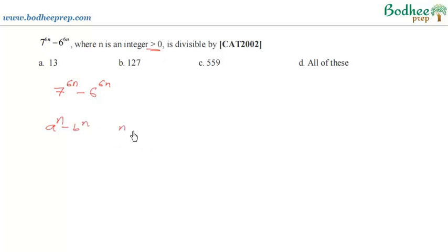For this we know that if n is odd then a to the power n minus b to the power n is divisible by a minus b only. But if n is even, then a to the power n minus b to the power n is divisible by both factors, that is a minus b as well as a plus b. So my objective would be to take n as even first.